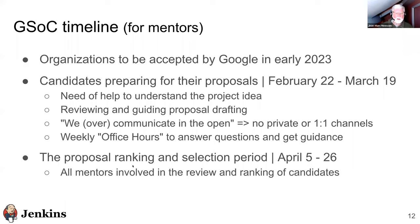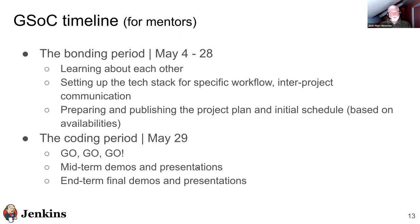In April, we'll have the proposal ranking and selection period. This is when we evaluate and rank proposals. Mentors are expected to review proposals asynchronously — giving notes and comments — and then we'll have one or two meetings to fine-tune rankings. After selection, Google announces slots — for example, 'you've got four slots' — and the top-ranked projects are accepted. The first phase during May is called the bonding period, where you learn who you are, how you work, set up the tech stack, and refine the project plan.